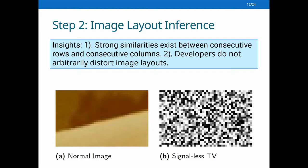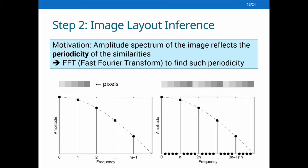The next step is to infer the layout information associated with the embedded image. An image — especially a sensitive one — is quite different from other artificially generated data, such as a single-color TV screen. Therefore, strong similarities exist between consecutive rows and consecutive colors. Another insight is that developers do not arbitrarily distort the image layout. Our approach is based on the fact that the amplitude spectrum of the image reflects the periodicity of this similarity, and we leverage the spectrum produced by a Fast Fourier Transform to find such periodicity.